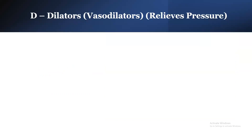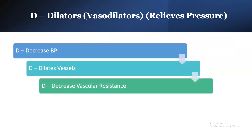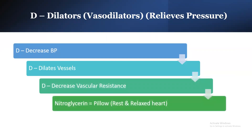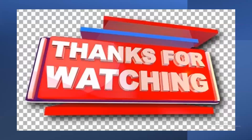The other D is for dilators — vasodilators. Three D's: decreased pressure, dilated vessels, decreased vascular resistance. Nitroglycerin is used as a vasodilator for a rested, relaxed heart. Caution: this drug should not be given with any erectile dysfunction drugs like sildenafil or Viagra, as it can cause death. Thanks for watching.